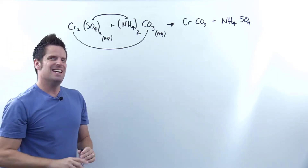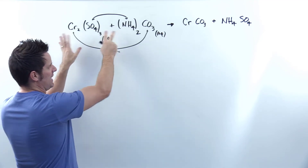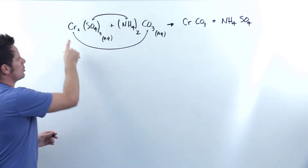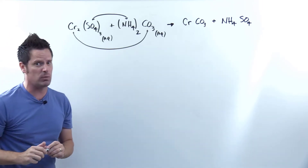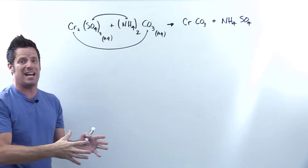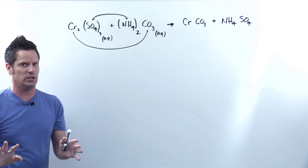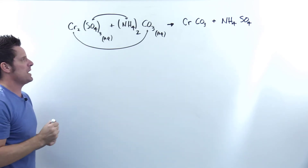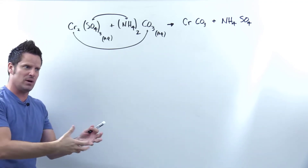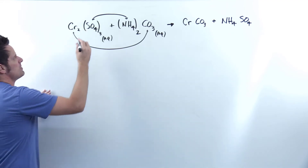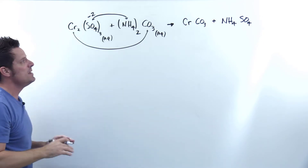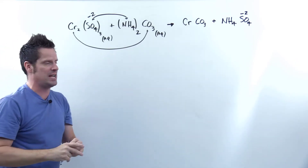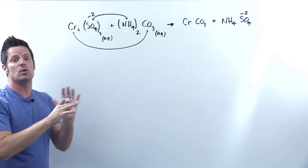The partner swap is now done. Next, we figure out the charges of everything on the left and bring those charges over, then use those charges to determine where subscripts go. Chromium is in the D block on the periodic table, which means you cannot simply look at it and know its charge. D block elements don't have a giveaway charge. We figure out chromium's charge by back-calculating from sulfate, which is a polyatomic you must memorize — it has a charge of negative 2. In double displacement or metathesis reactions, charges do not change as you go from left to right.